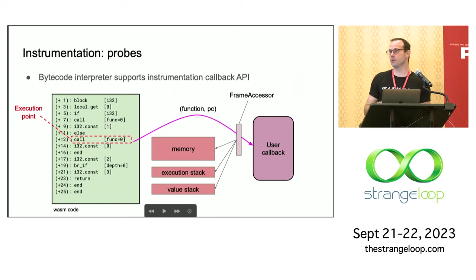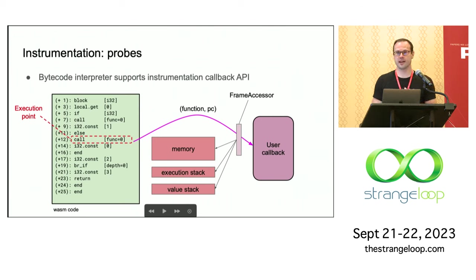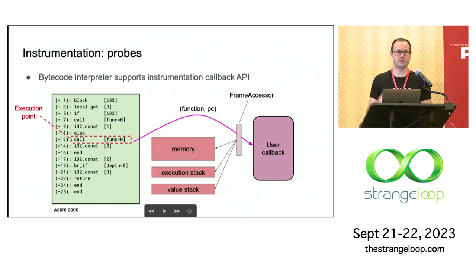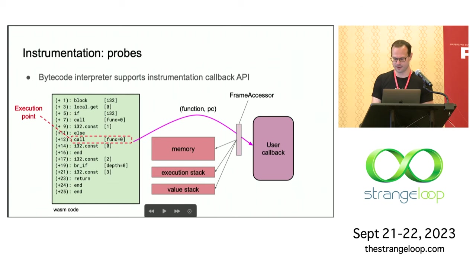Whatever we want to see about the program, we can package that up behind an interface called the frame accessor. The frame accessor gives this user callback a view of the state of the executing WASM program — whether that's the actual memory the program is using, the execution stack including all the functions on the stack, and all the values the program is manipulating. Having this one pinch point in the API means the engine knows every time that this callback is accessing program state, and so the engine can optimize against that interface.